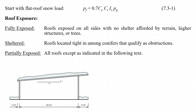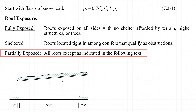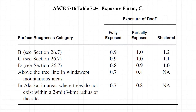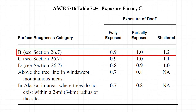With respect to roof exposure, we have the option of classifying it as fully exposed, sheltered, or partially exposed. For this structure, we will classify the roof as partially exposed. Referring to Table 7.3-1 of the 2016 ASCE 7 standard, using surface roughness category B and partially exposed, we get an exposure factor C sub e equal to 1.0.